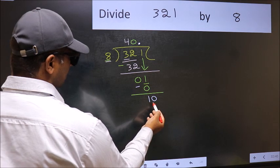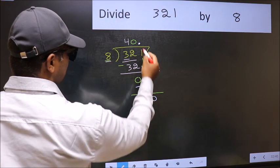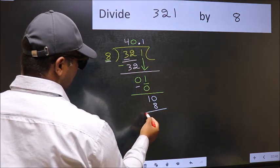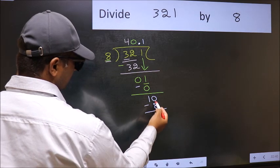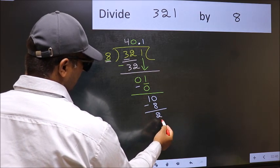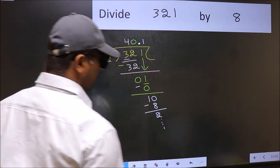So 10. A number close to 10 in 8 table is 8 once, 8. Now you should subtract. We get 2. And continue the division. I am not doing that.